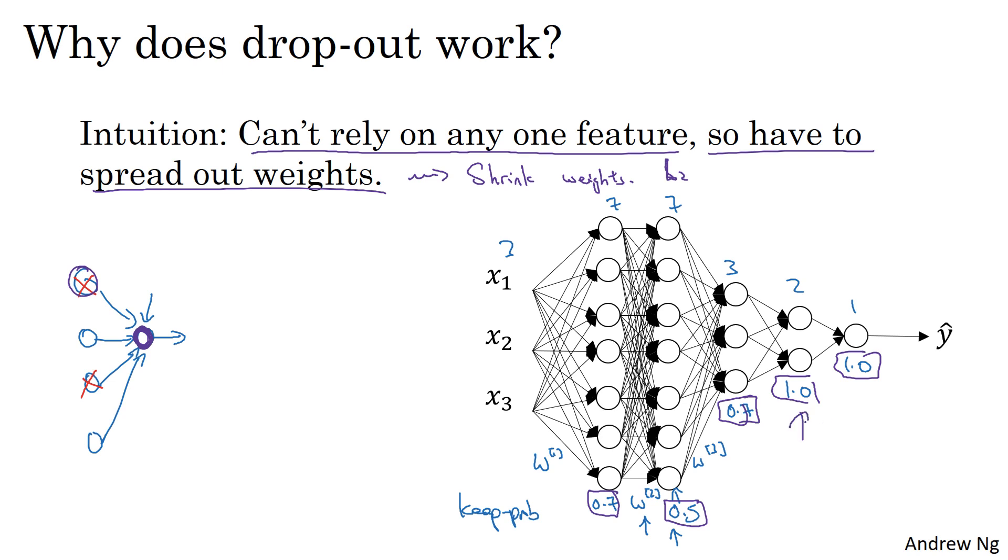Notice that the keep_prop of 1.0 means that you're keeping every unit and so you're really not using dropout for that layer. But for layers where you're more worried about overfitting, really the layers with a lot of parameters, you could set keep_prop to be smaller to apply a more powerful form of dropout.